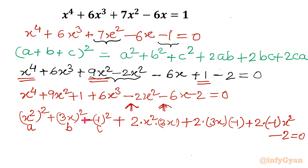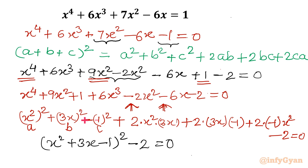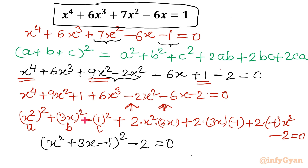This expansion is basically (x² + 3x - 1)², so our equation becomes (x² + 3x - 1)² - 2 = 0. The quartic equation has been converted into a quadratic-type equation, so the solution will be easy.